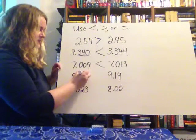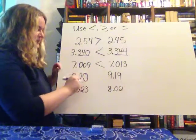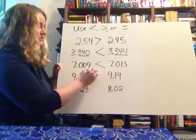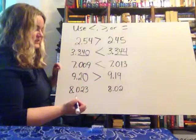As you take a look at this one, again, I can make it the same length. If I look at the ones place, they're both the same. The tenths place, I've got a two and a one, so two is bigger than one. So 9.2 is greater.